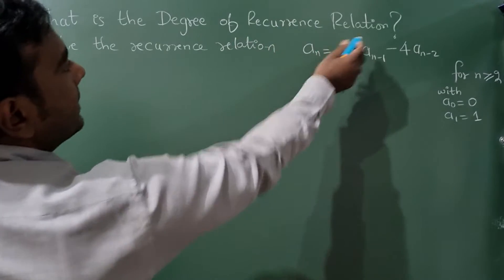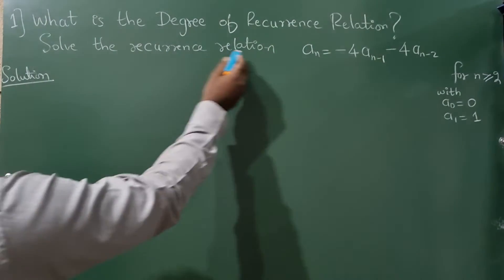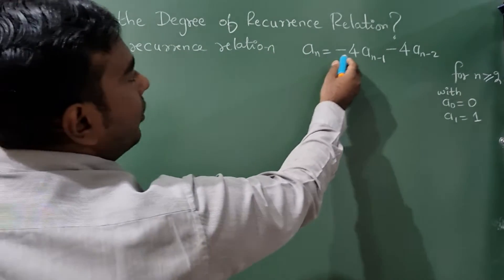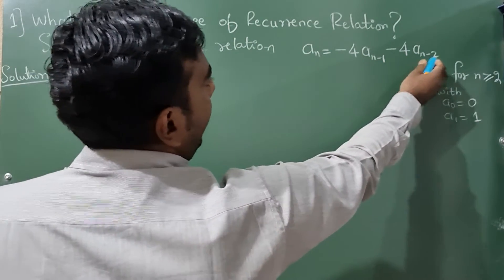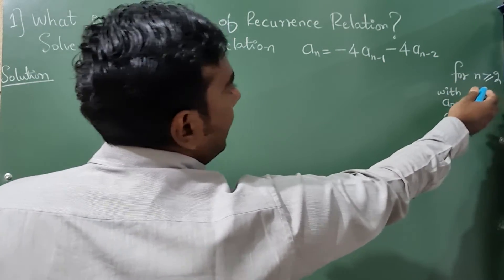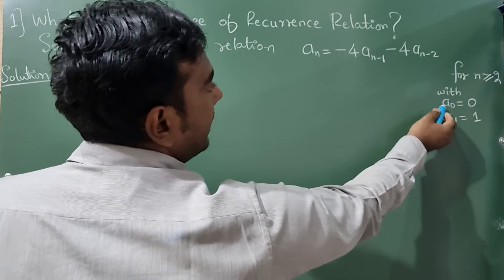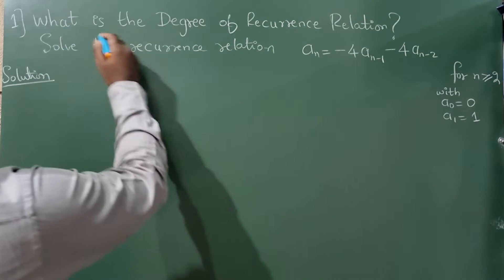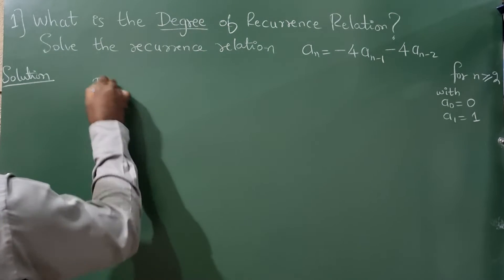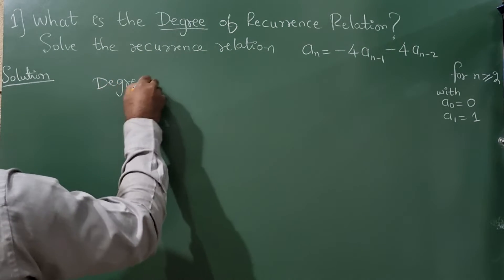What is the degree of recurrence relation? Solve the recurrence relation a_n = -4a_{n-1} - 4a_{n-2} for n ≥ 2 with initial condition a_0 = 0, a_1 = 1. Now the first question is what is the degree here?